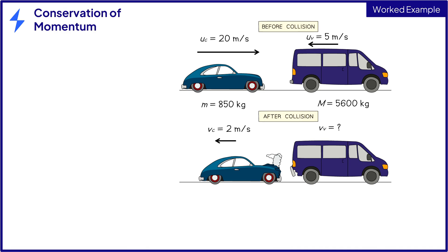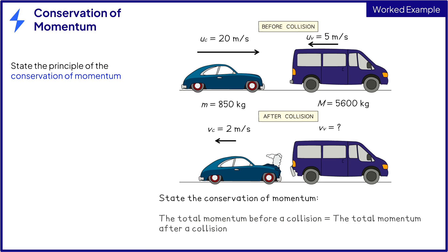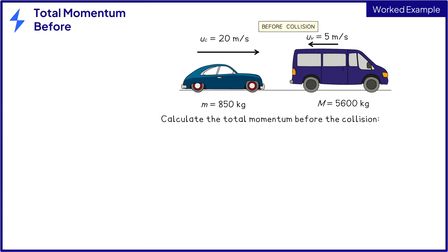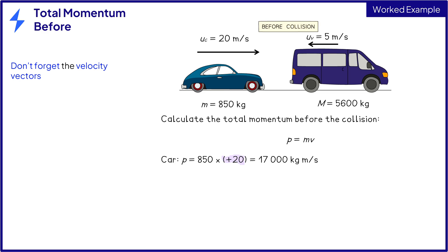The first step in answering this question is to state the conservation of momentum for one mark. Now let's calculate the total momentum before the collision. Momentum is equal to mass times velocity. For the car, this is 850 times 20 which equals 17,000 kilograms meters per second. It is plus 20 because the car is moving forwards in the positive direction. For the van, this is 5,600 times minus 5 which equals minus 28,000 kilograms meters per second.